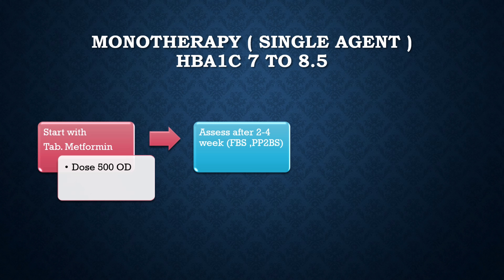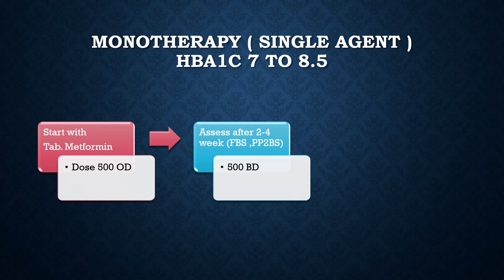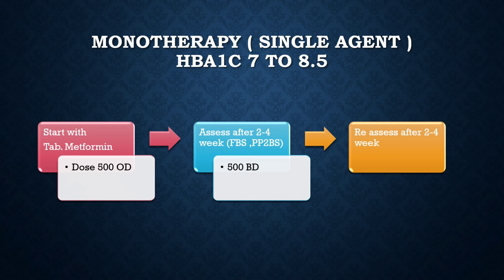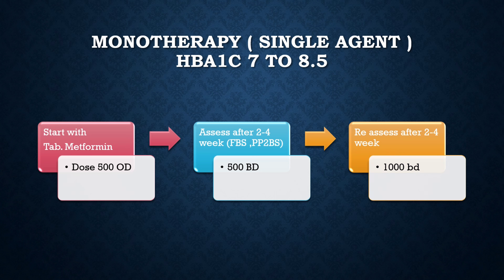We should assess with FBS and PP2BS after 2 to 4 weeks. If not controlled, we can increase the dose from 500 mg once a day to 500 mg twice a day. Then reassess FBS and PP2BS after 2 to 4 weeks. If still not controlled, we can increase to the maximum dose of 1000 mg twice a day — so the maximum dose of metformin is 2000 to 2500 mg.